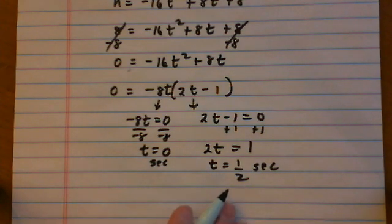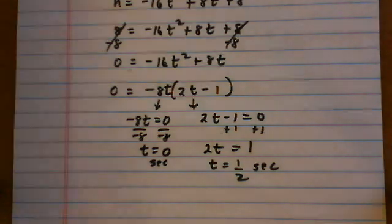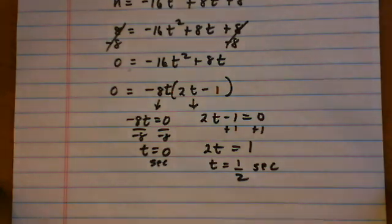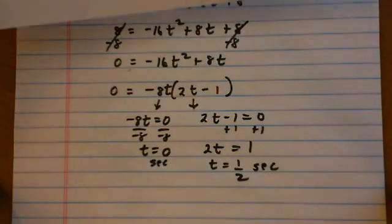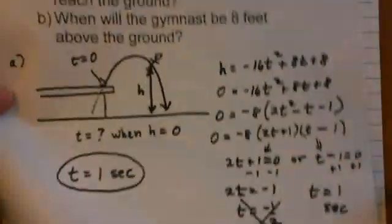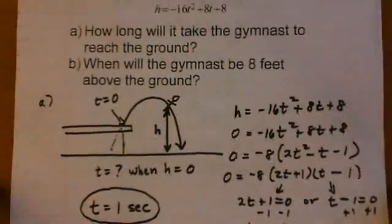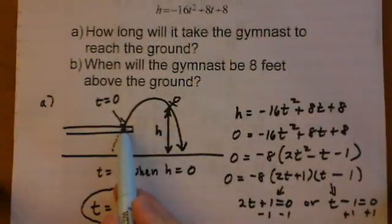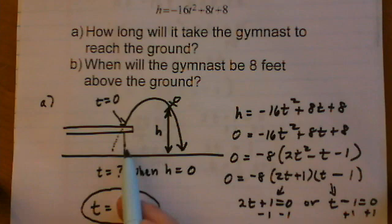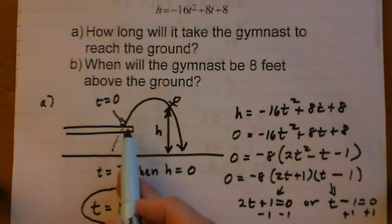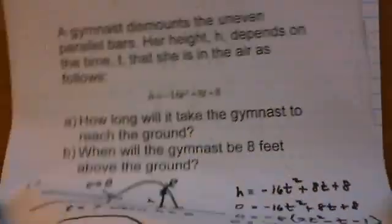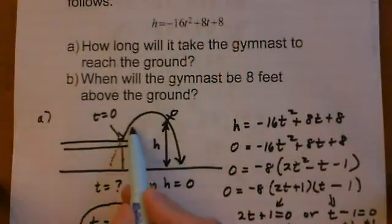So we have two answers again, and what we need to do is see does that make sense with our situation. So 0 seconds. So we want to know, does that make sense for her to be at a height of 8? 0 and a half seconds. So if we look at the picture, at t equals 0, she's just about to dismount. Yeah, that makes sense. That's a reasonable thought that she might be at 8 feet off the ground. And then a half second later, she's at 8 feet again.